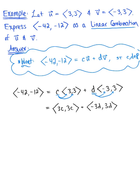And again, using our vector arithmetic, we can combine our like components. So we can think about this now as one big vector where we're combining those x components. So I have 3c minus 3d, and then we're combining the y components. So this will be 3c plus 3d.